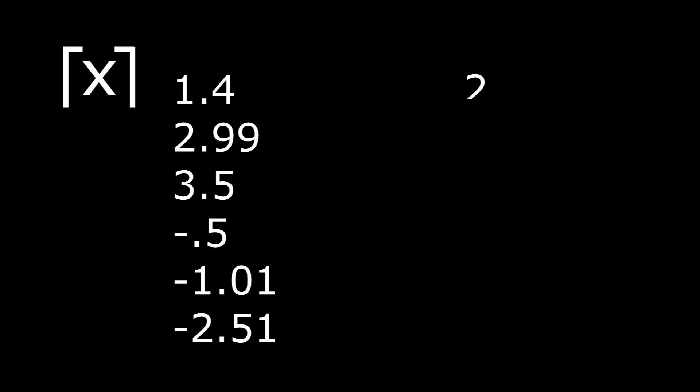Using the same inputs, you can see the ceiling function rounds up. Where 1.4 becomes 2 and 2.99 now becomes 3. Negative 0.5 goes to 0 and negative 2.51 goes to negative 2. Here's the graph.